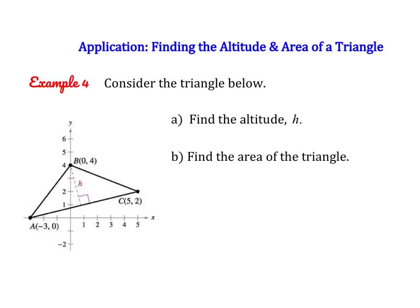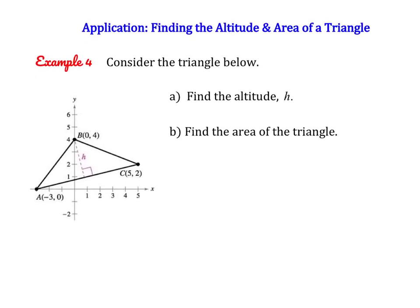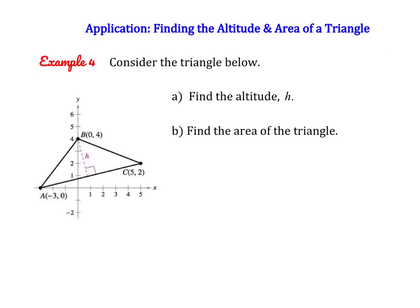We have a triangle on a coordinate plane, triangle ABC. They'd like us to find the altitude from B to the line AC, and then the area of the entire triangle. Strategy-wise, we'll use the distance between a point and a line formula for that altitude. We don't know the equation of line AC, but we know two coordinates, so we can find the equation of line AC — that's the first thing we need to do.